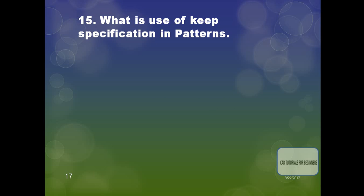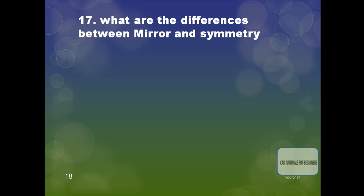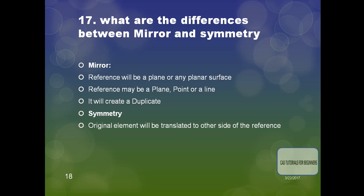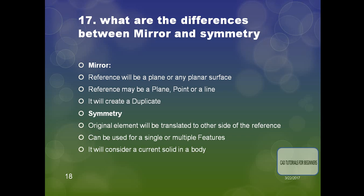The next question: what are the differences between Mirror and Symmetry? For Mirror, the reference is a plane or any planar surface. For Symmetry, the reference may be a plane, point, or line, and the original element is translated to the other side of the reference. Mirror creates a duplicate, while Symmetry can be used for single or multiple features and considers the current body.